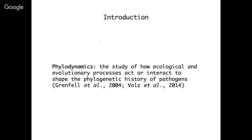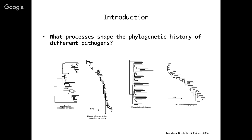In phylogenetics, we're interested in why pathogen phylogenies look the way they do. Why, for example, does the measles phylogeny look so different and balanced in contrast to the human influenza H3N2 phylogeny, which has this highly spindly-looking phylogeny with lots of clade turnover through time? Similarly, why does an HIV phylogeny sampled at the population level look so different from one sampled within-host? The answer in both cases is selection acting on antigenic escape mutations, which leads to dramatic turnover in diversity through time.